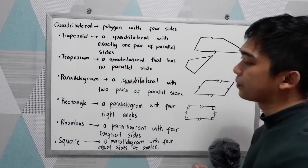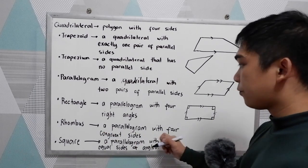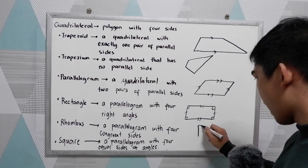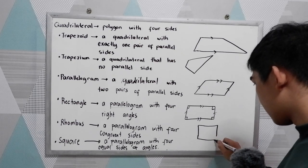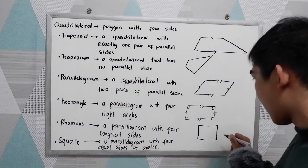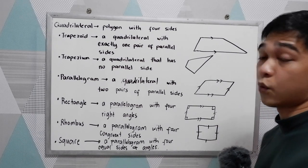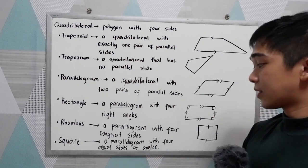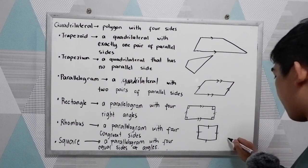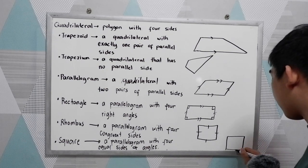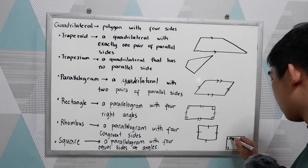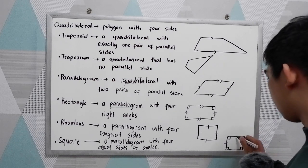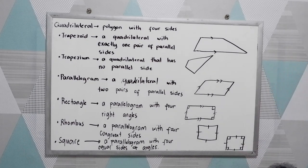Rhombus — a parallelogram with four congruent sides. So this side is equal to all the others; all sides are equal. And a square is a parallelogram with four equal sides and angles. A square is a combination of a rectangle and a rhombus, so all angles measure 90 degrees and all sides are congruent or equal.